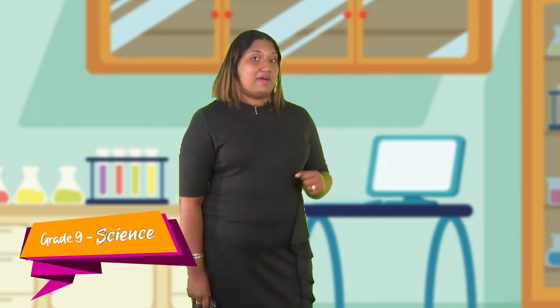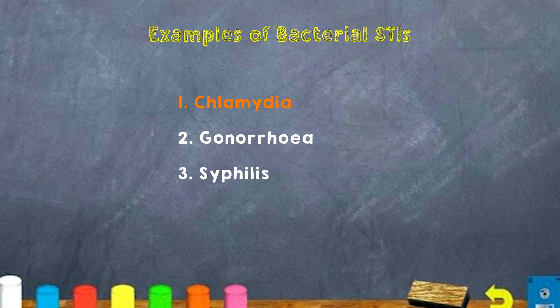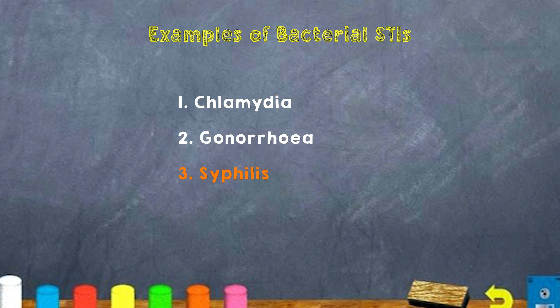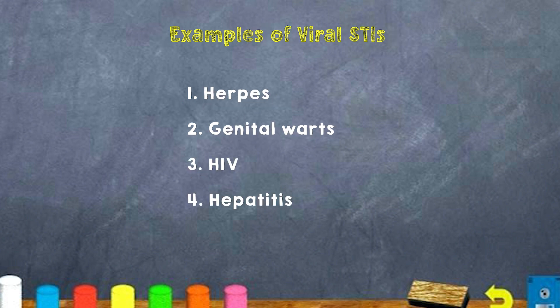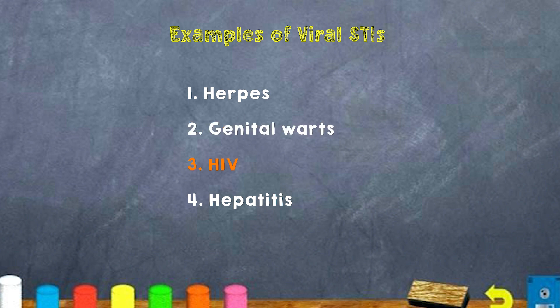Some examples of bacterial STIs, or STIs caused by bacteria, are Chlamydia, Gonorrhea, and Syphilis. Some examples of viral STIs, or STIs caused by a virus, are Herpes, Genital warts, HIV, and Hepatitis.